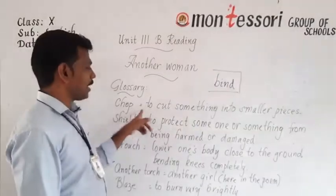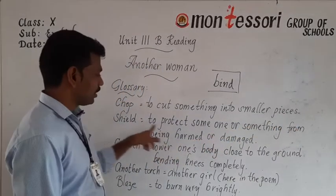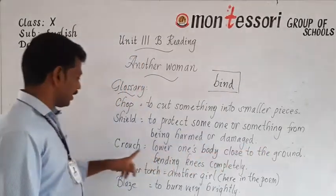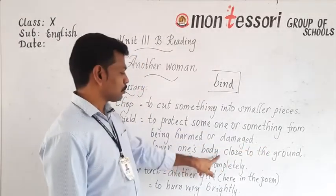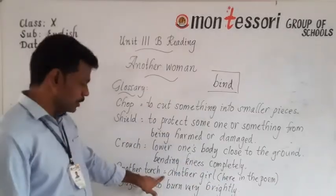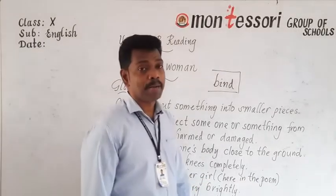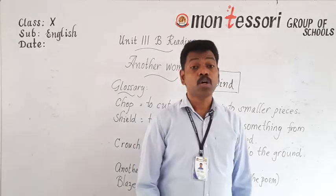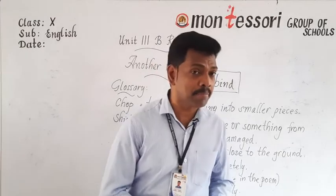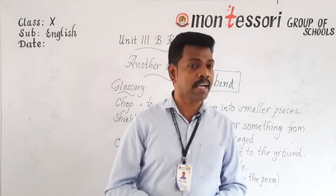The meanings: chop — to cut something into smaller pieces; shield — to protect someone or something from being harmed or damaged; crouch — to lower one's body close to the ground by bending the knees completely. Another torch in this poem means another girl; blaze means to burn very brightly. Dear children, go through this poem and the video again and again, read the textbook and work with the material to understand things in a better way. Thank you.